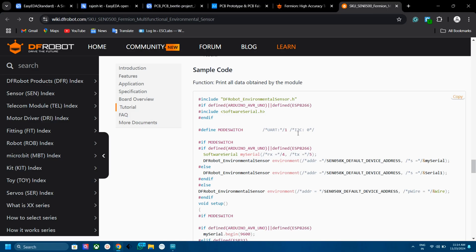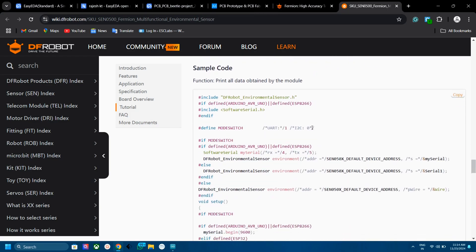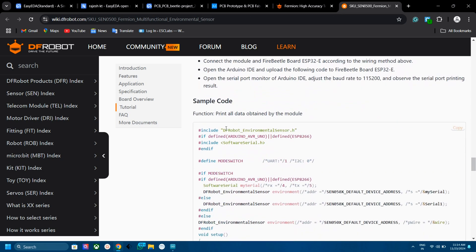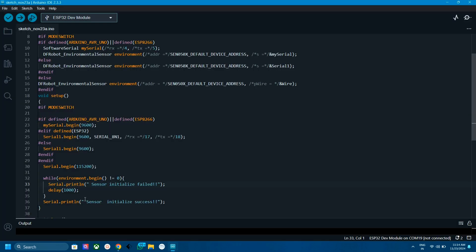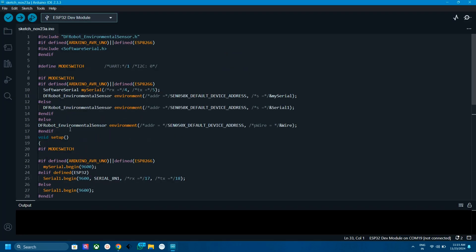After adding the libraries, open the Arduino code. You can copy that from the dfrobot site or you can download from the link. So here is the code. Here you can see a defined mode switch. By default, this code is for UART communication. If you want to use I2C, then change this one to zero. That's it. We don't want to change anything because we are using UART.